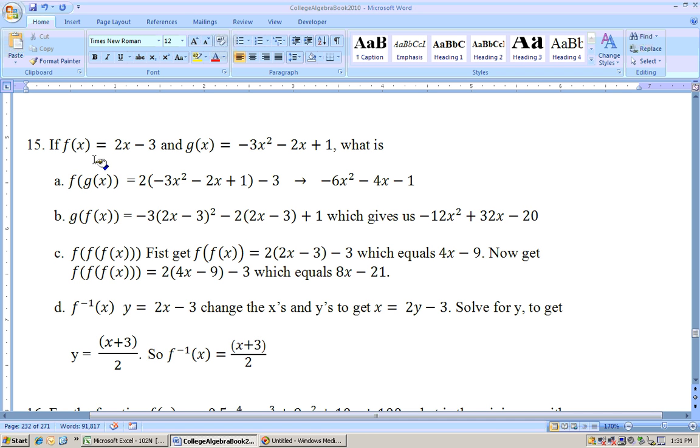On problem 15, it gives you two functions: f(x) = 2x - 3 and g(x) = -3x² - 2x + 1. First of all, it wants to know what is f(g(x)). Well, f(g(x)) means to do this: put the g(x) function into the f(x) function where the x is.